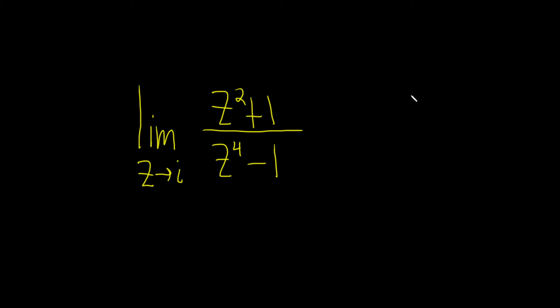So if you plug in i right away, you end up with i squared plus 1 over i to the fourth minus 1. i squared is negative 1, so we get negative 1 plus 1 over, and then i to the fourth is i squared times i squared, so it's negative 1 times negative 1, so it's 1.